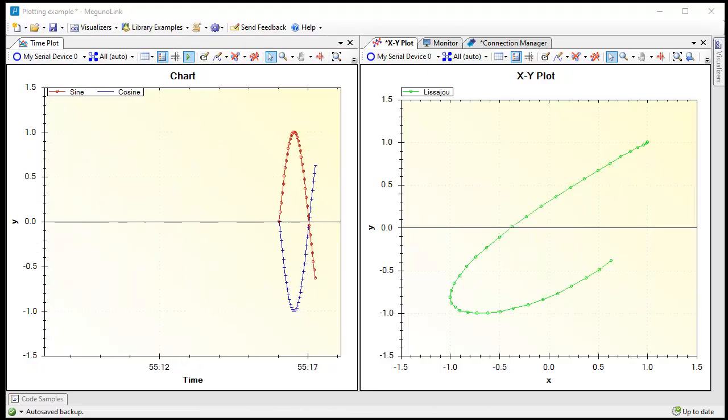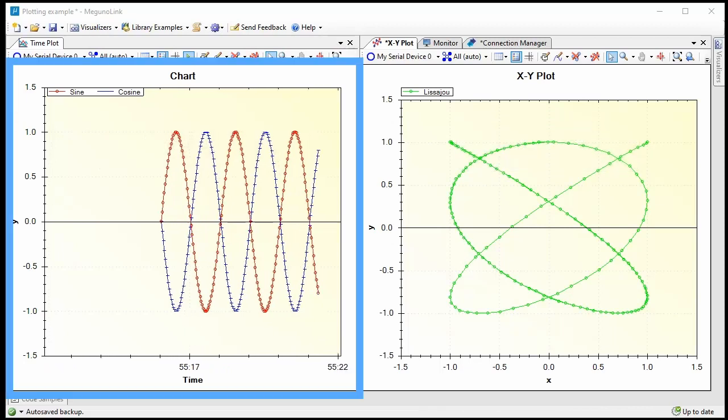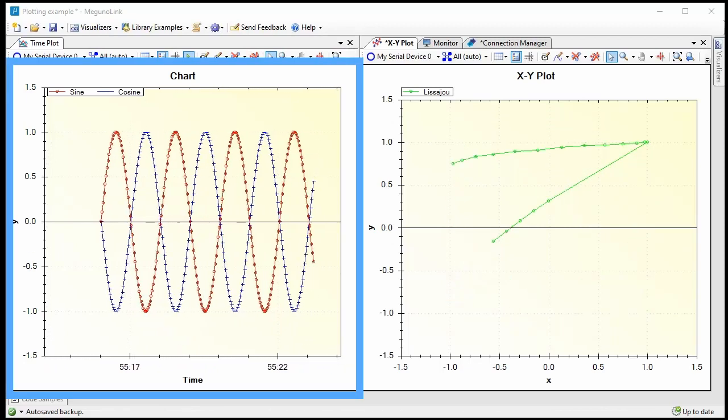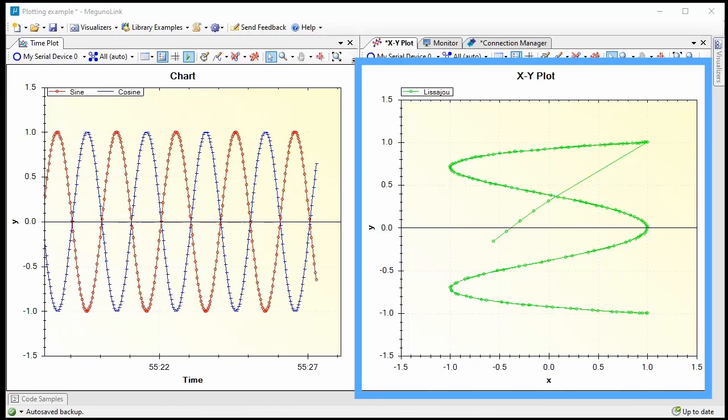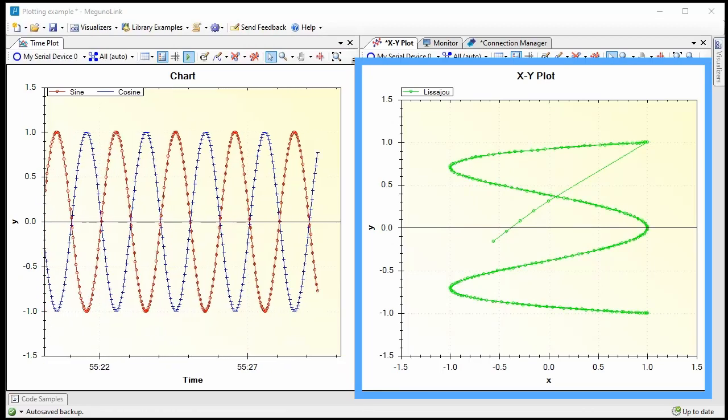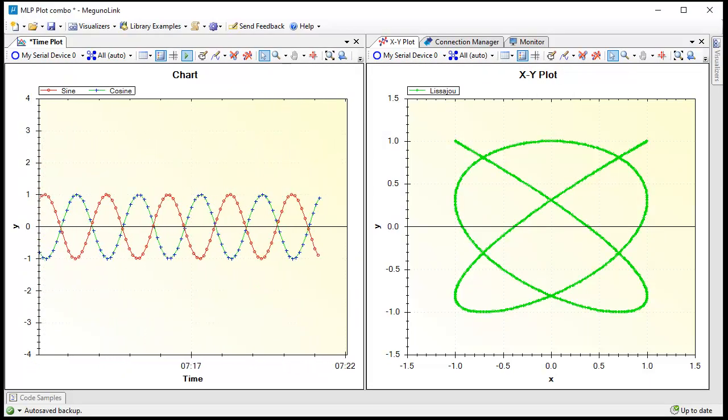MagunoLink has two plot visualizers: a time plot and an XY plot. Our time plots, like Arduino's serial plot, show values against time. Our XY plot shows one data value against another. Both give you much greater control over the appearance and behavior of plots.